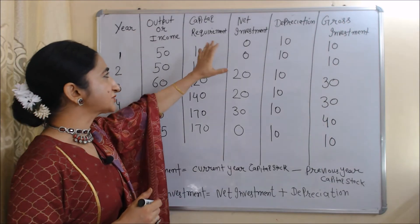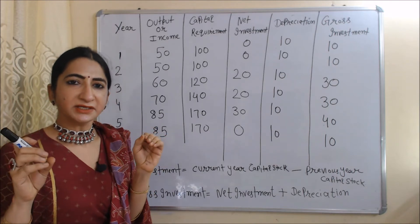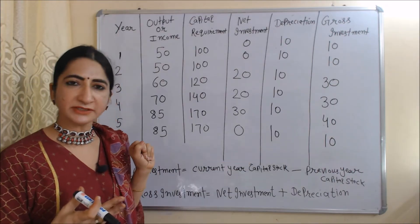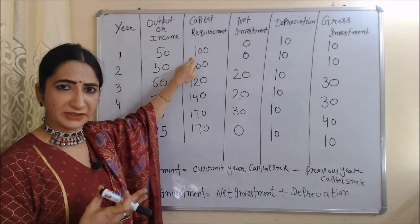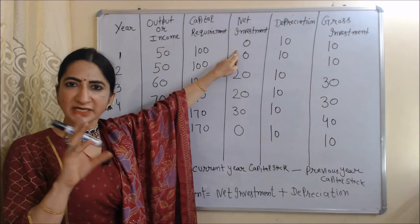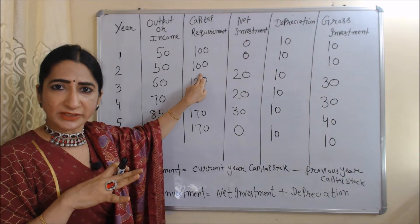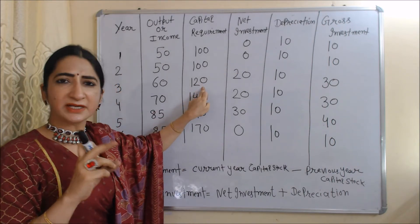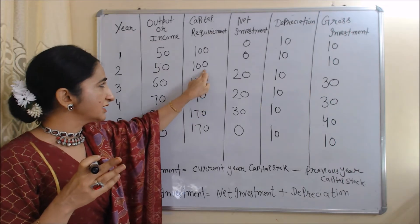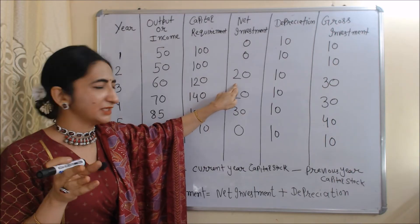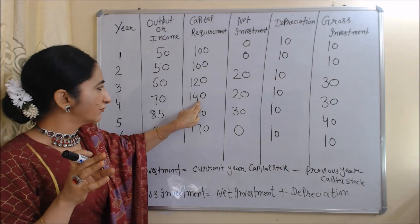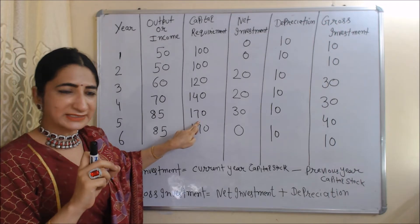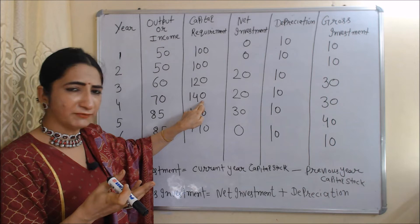The next column is net investment. Net investment tells us the change in capital stock, and the formula is: current year capital stock minus previous year capital stock. In the first period, we don't know the previous year, so net investment is assumed to be zero. In the second year, 100 − 100 = 0. In the third period, 120 − 100 = 20. In the fourth period, 140 − 120 = 20. In the fifth period, 170 − 140 = 30.